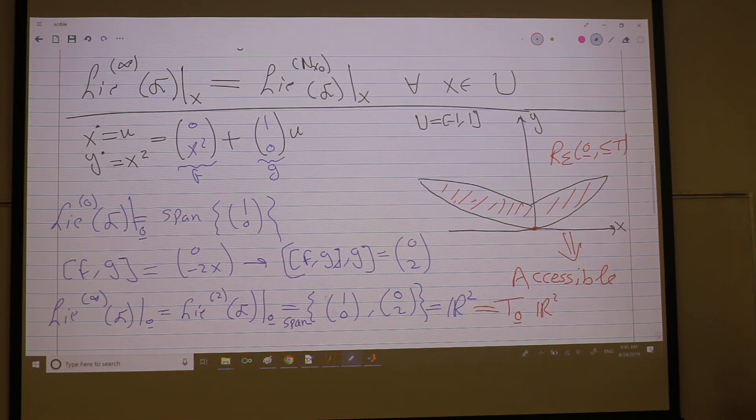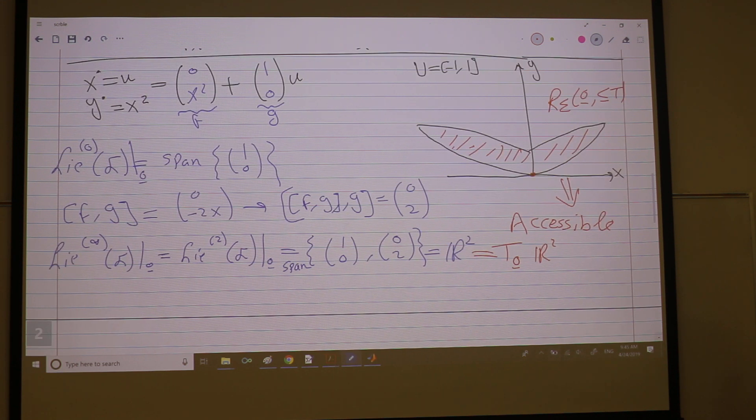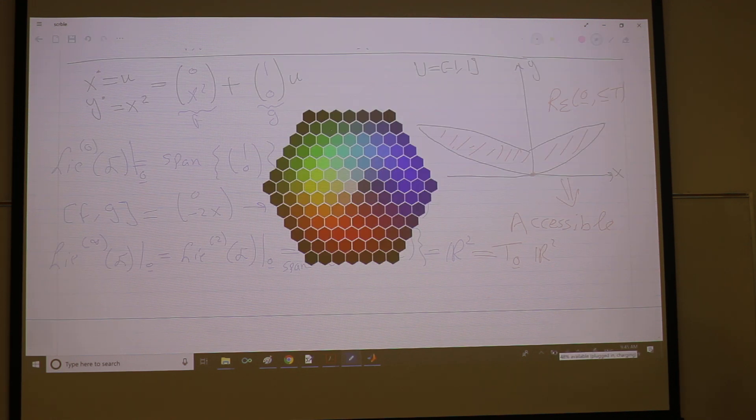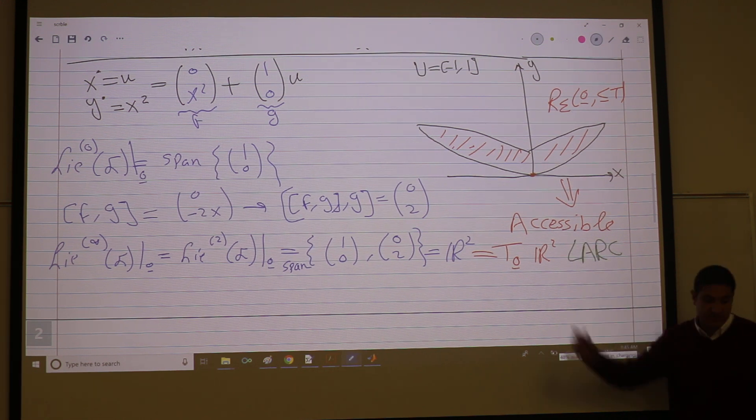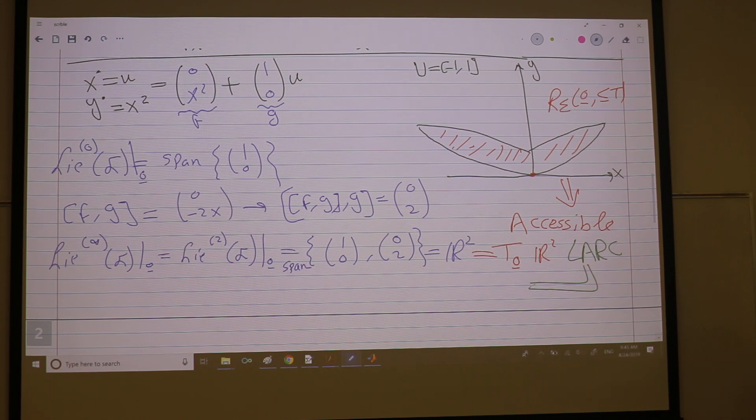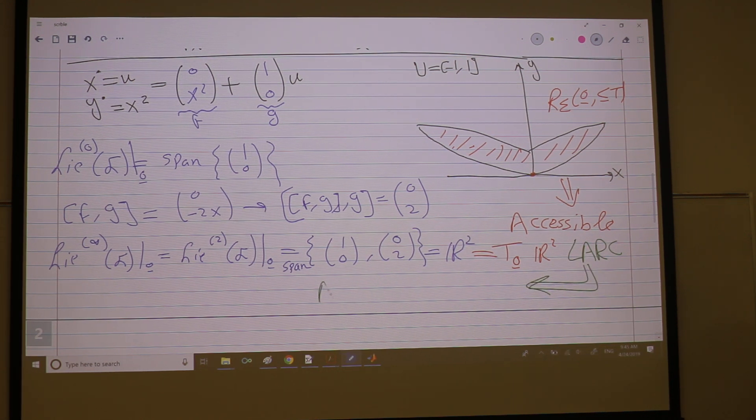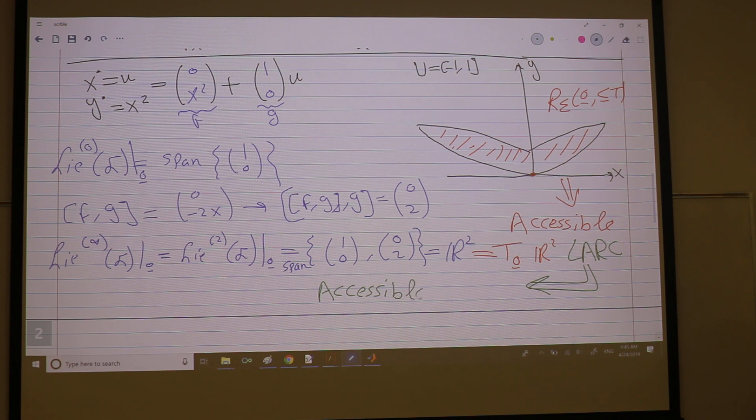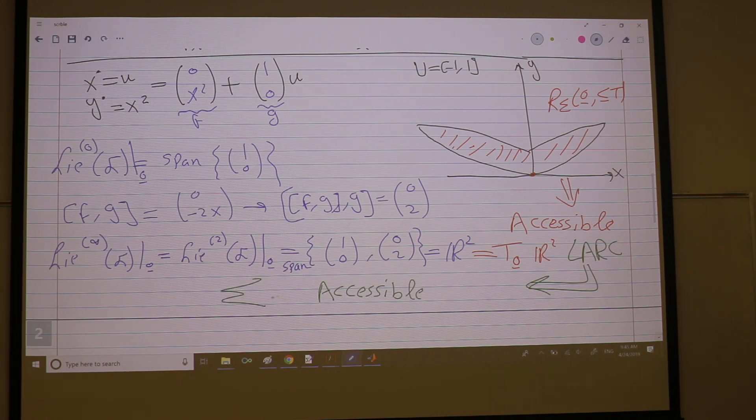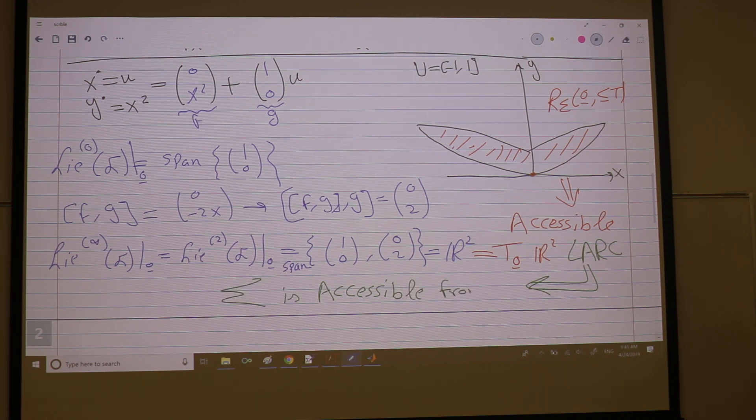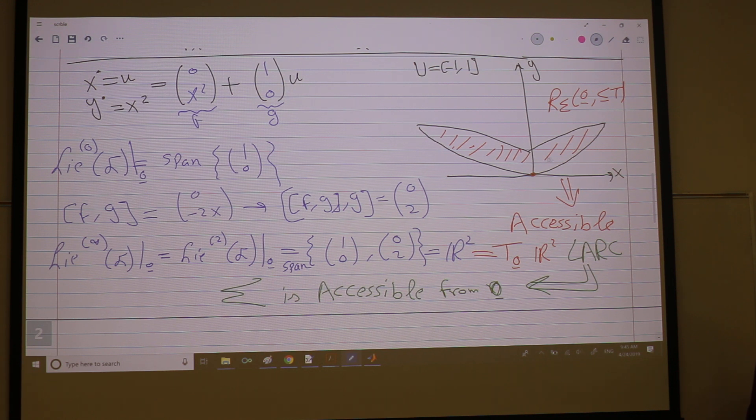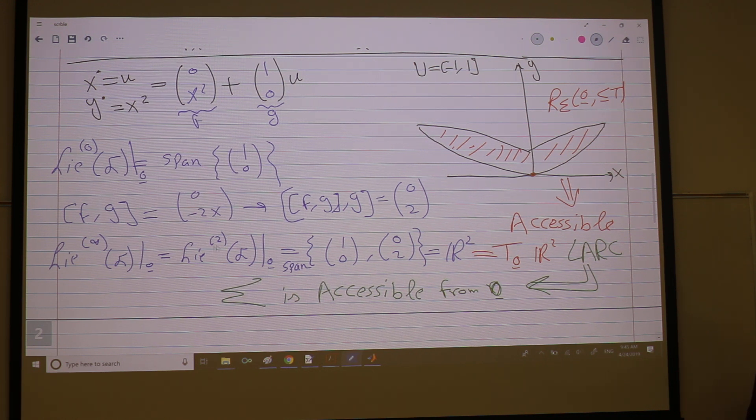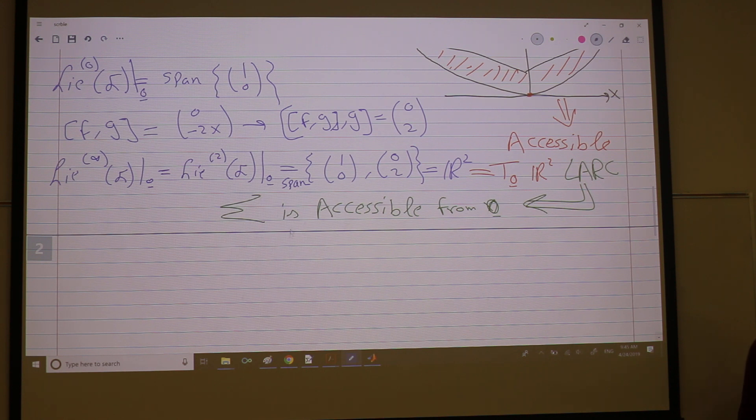So it covers the entire tangent space. So this is what we refer to as the LARC. This is the LARC property. I'm covering the entire tangent space, and the LARC implies what? The LARC implies accessible. So sigma, my control system, is accessible from the origin. So I have a computational tool. I don't need to go and compute the reachable set which is very hard to characterize. Here I just do Lie bracketing until I am done.